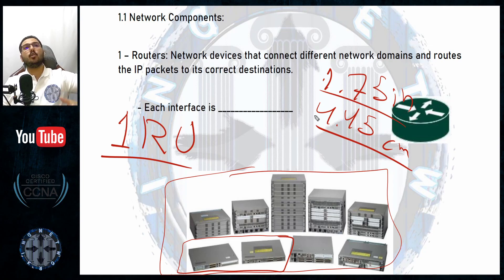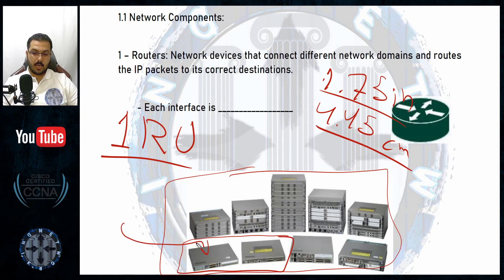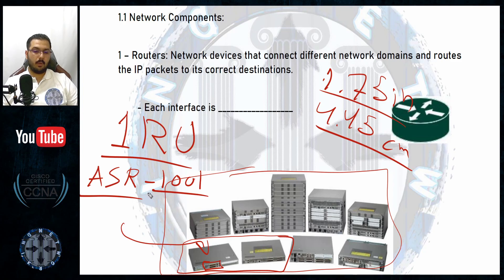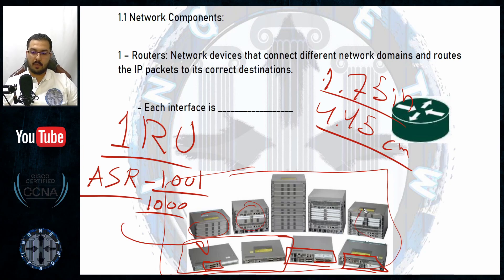All of these manufacturers measure their device thickness in rack units, because when you build a server room you typically purchase a 42 rack unit rack — meaning it can hold 42 one-RU devices. Cisco's ASR (Aggregation Services Router) 1000 series includes models like ASR 1001, 1002, 1004, 1006X, and 1009 — the instructor's personal favorite, having worked with it extensively.